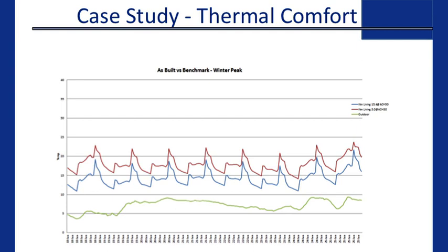On thermal comfort: here we have a graph showing the total number of hours spent at each temperature throughout a year for a kitchen living area. The red columns are at five air changes per hour, and the blue columns are that same area at 15 air changes per hour. There's a massive amount of additional hours in the comfortable range of 18 to 24 degrees — actually an additional 80 days in comfort with no air con or heating assistance, just due to build quality. In a typical winter week, the leakier zone sits three to four degrees colder constantly, and this is without heating and cooling assistance.